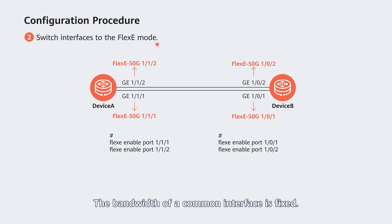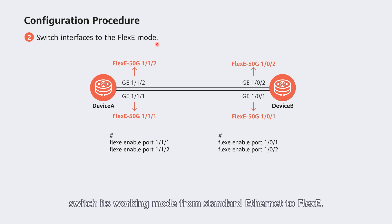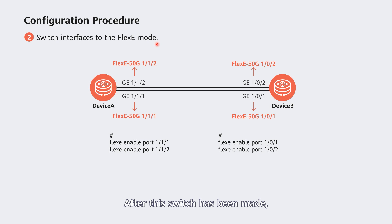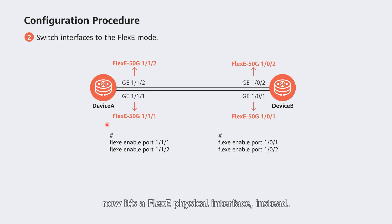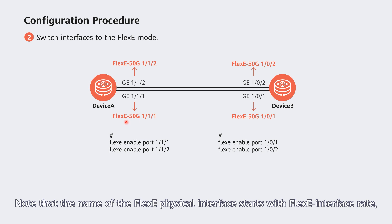Next, switch interfaces to flexi mode. The bandwidth of a common interface is fixed; to flexibly customize the interface bandwidth, switch its working mode from standard Ethernet to flexi. After this switch has been made, the interface is no longer a common physical interface — it is now a flexi physical interface. Note that the name of a flexi physical interface starts with 'flexi interface rate'.